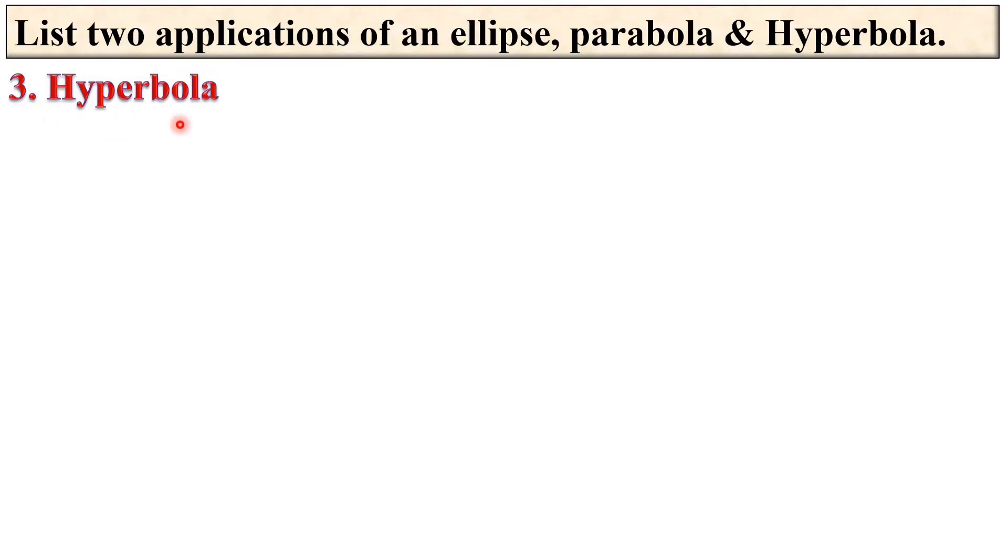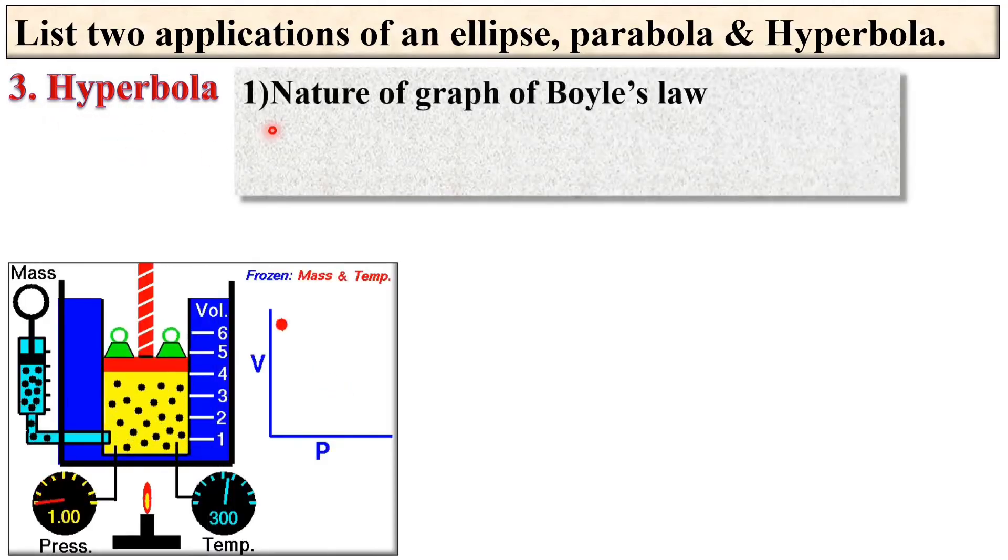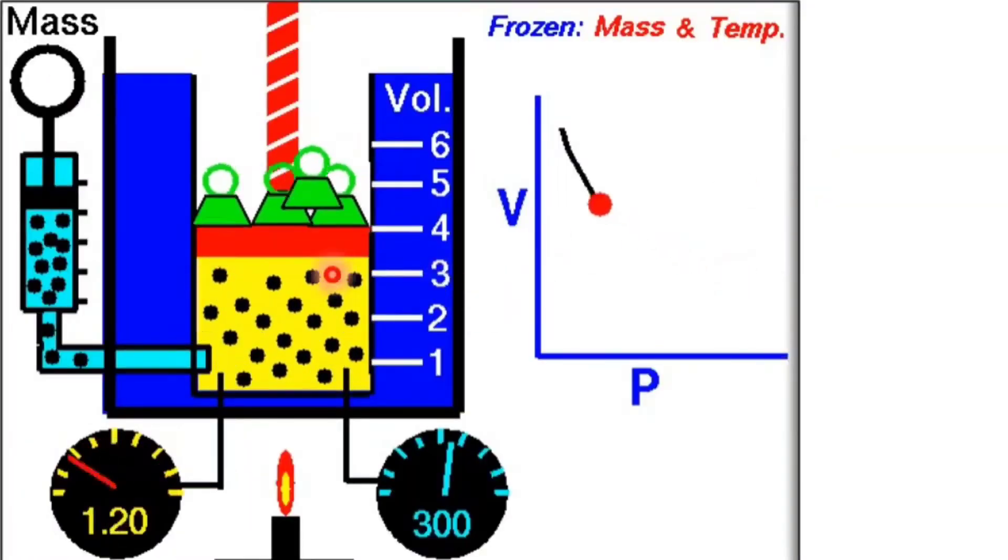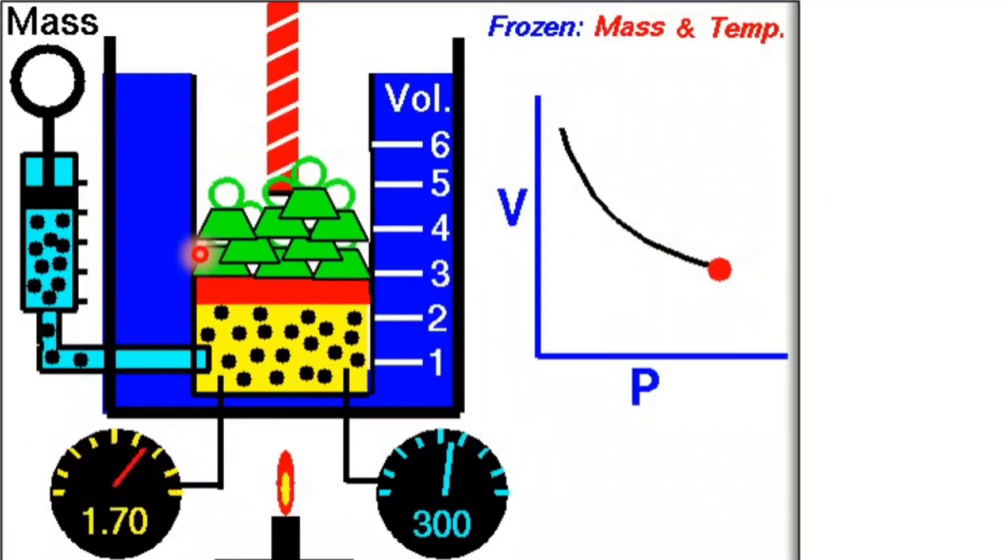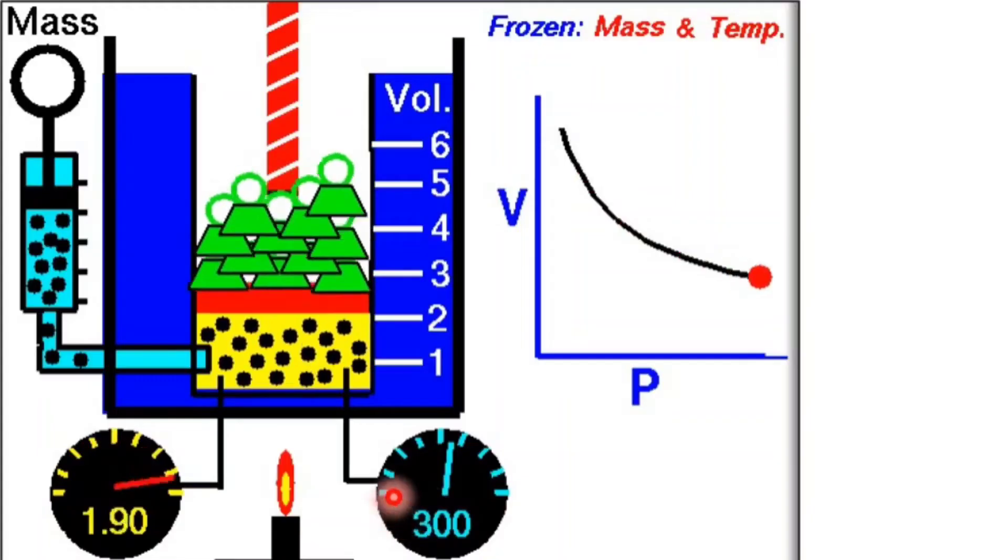Now last one third one hyperbola. First application. Nature of graph of Boyle's law. Here you can see this is Boyle's law where the temperature is constant.